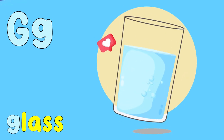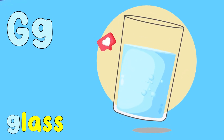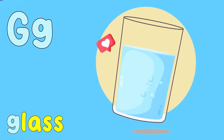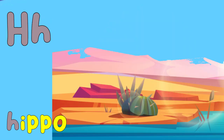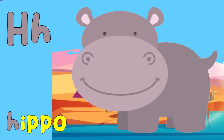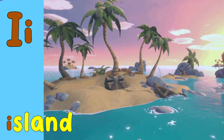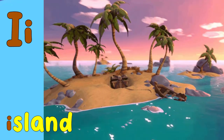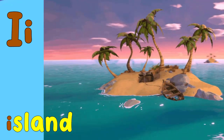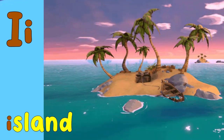G is for glass, g, g, g. H is for hippo, h, h, h. I is for island, i, i, i.